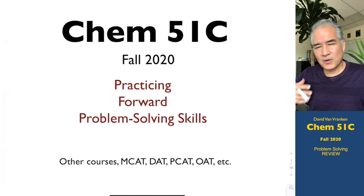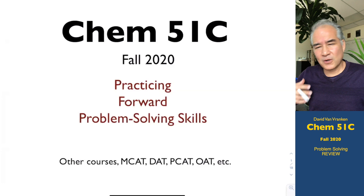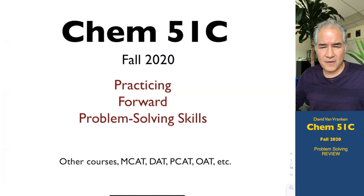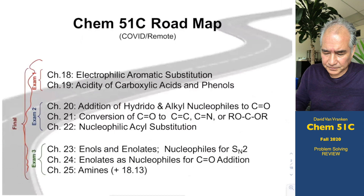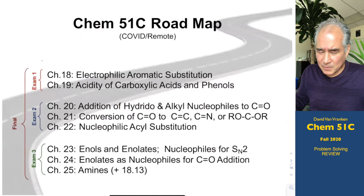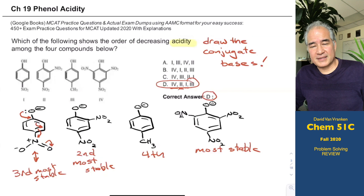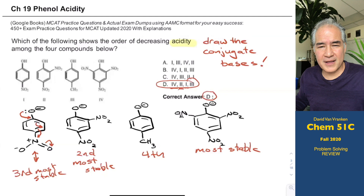Our last few days, I told you I wasn't planning on giving any new material this week — I was simply going to review problem-solving skills to help you for our exams and beyond. I'm taking content from all over the Chemistry 51C course. When we left off, we were talking about a problem from an MCAT practice exam about ranking the acidity of phenolic compounds, which is usually all about resonance.